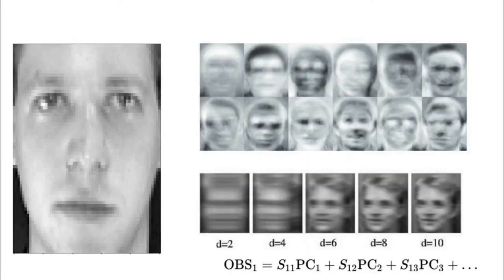This is the idea behind eigenfaces — using only 10 of these vectors gives a good description of an image. You are compressing the entire image into just 10 coefficients, 10 real numbers. Remember that idea anytime you unlock your phone using face recognition software.